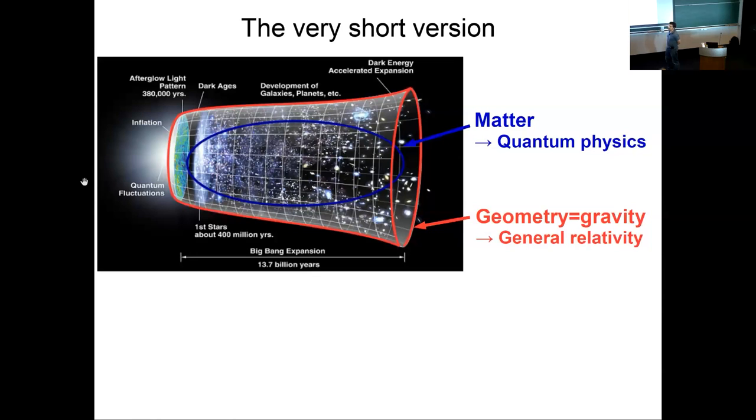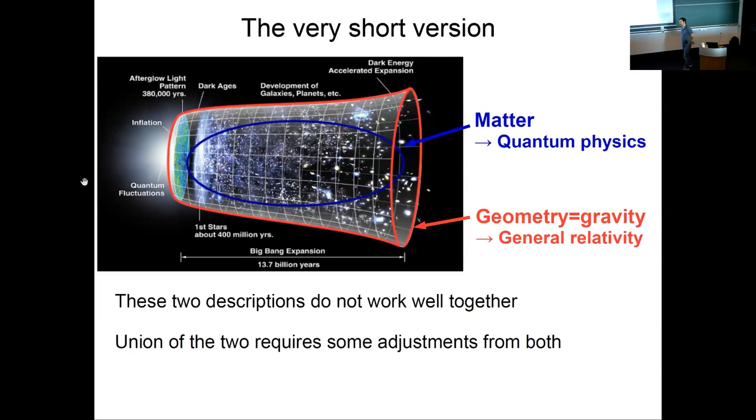The stuff inside the cup is matter. There's light, stars. The most fundamental description for the stuff inside the cup is given broadly by quantum physics—standard model of particle physics, quantum mechanics. Matter is quantum and gravity is geometrical.